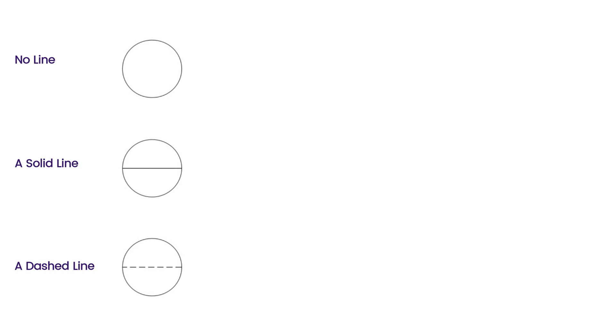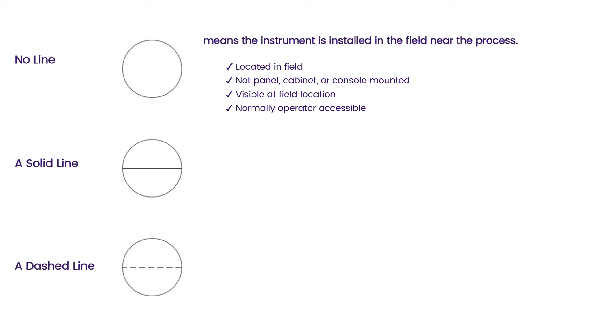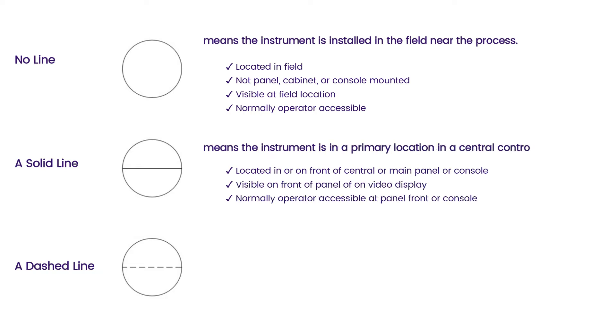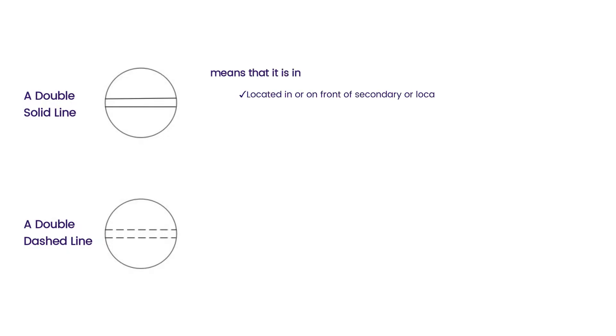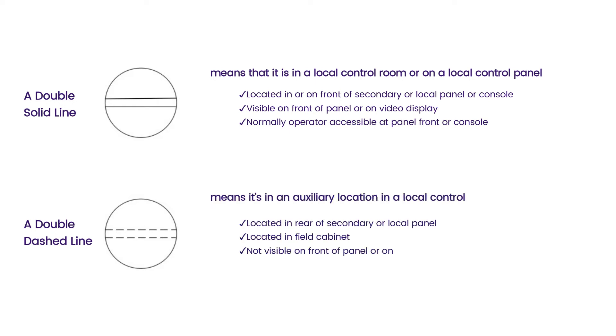In instrument indication symbols, lines can be different as per instrument location. No line means the instrument is installed in the field near the process. A solid line means the instrument is in a primary location in a central control room. A dashed line tells us that the instrument is in an auxiliary location in a central control room. A double solid line means that it is in a local control room or on a local control panel. A double dashed line means it's in an auxiliary location in a local control room or local control panel.